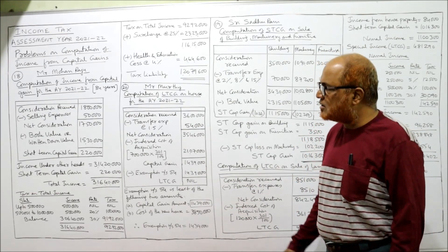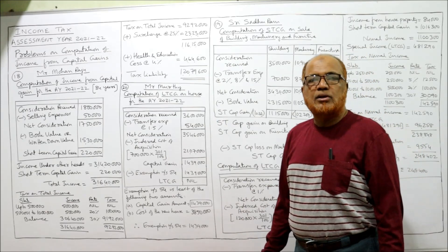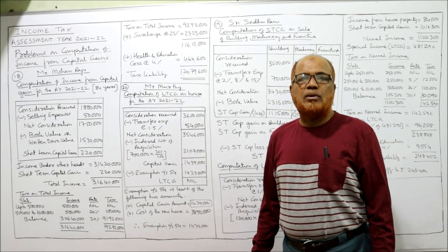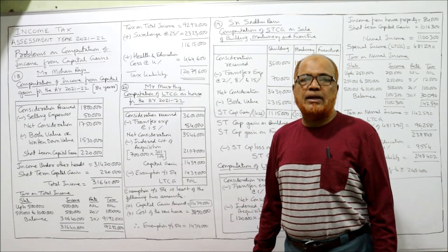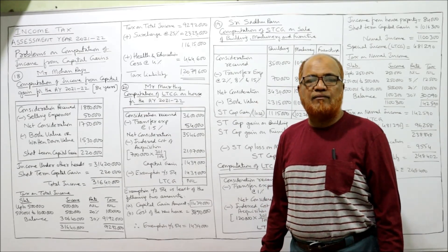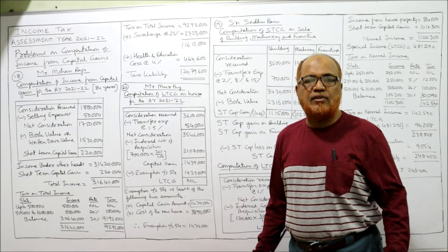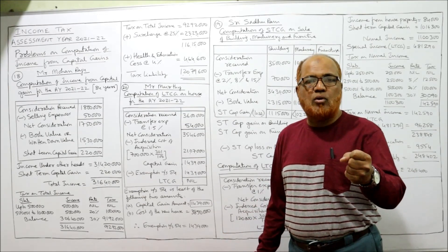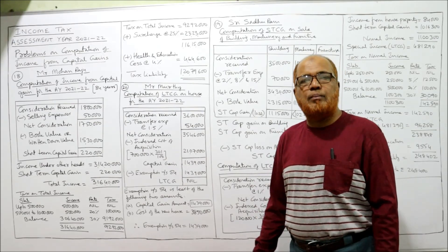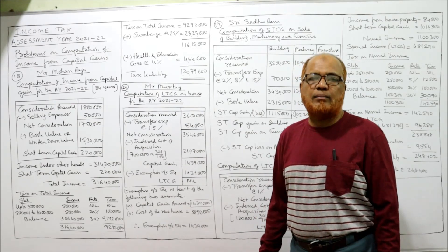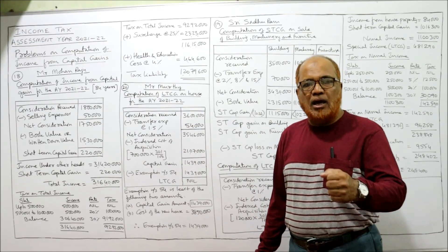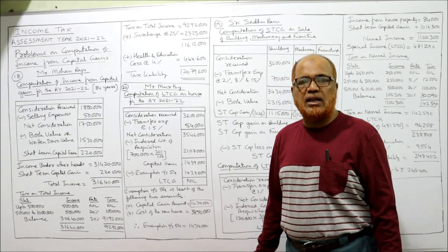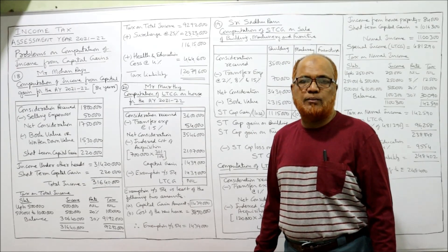That is the end of problem 20. In total, 20 problems have been completed on computing income from capital gain. If you have been continuously watching, you should have a good command on how to compute income from capital gain. The next problems will continue in the next video.